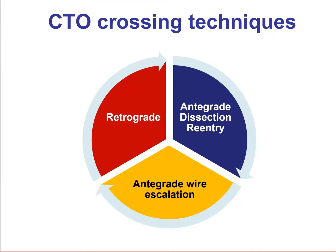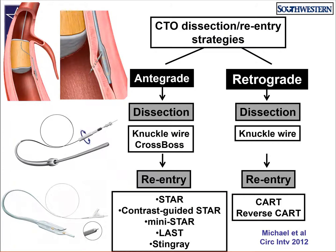There are currently three broad CTO crossing techniques. The first is antegrade wire escalation. The second is antegrade dissection reentry, and the third is retrograde — all of them have a specific role in achieving the highest success rates in the most safe and efficient way.